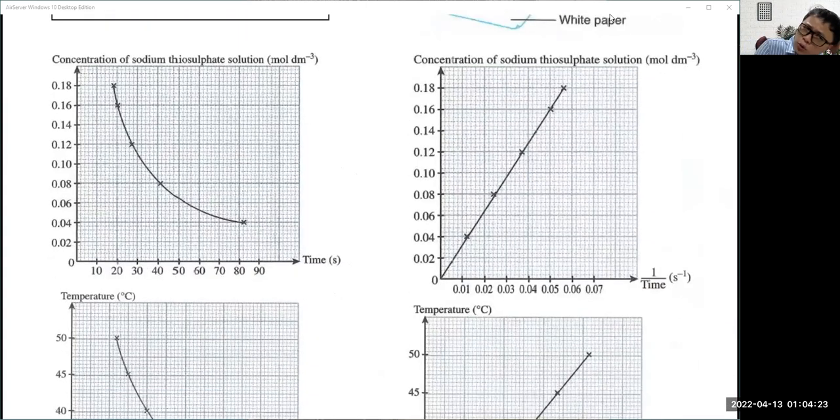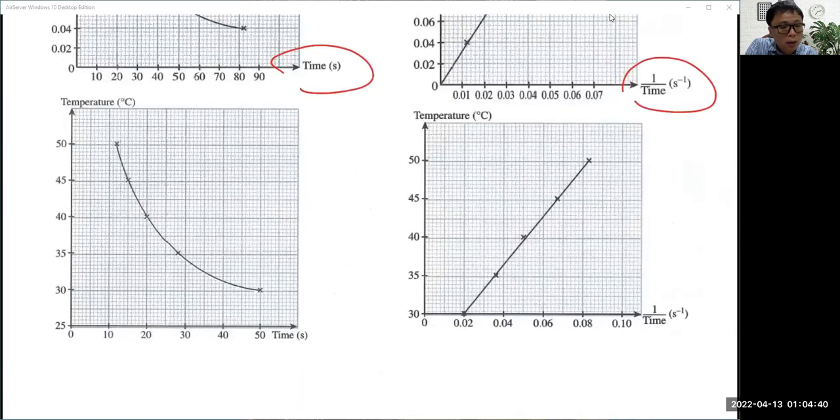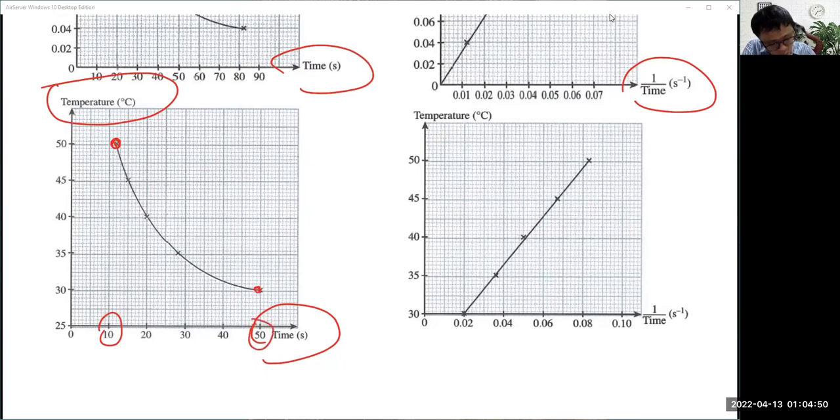For this one, they'll ask you to plot graph. This graph will look something like this, called inverse proportional. To convert inverse proportional to direct proportional, just like you learn in mathematics, you just take one over time, you get direct proportion. Same thing here. If you have inverse proportional, temperature and time, because the higher the temperature, the shorter the time, because higher temperature reaction fast. Lower temperature reaction slow, takes longer time. Same thing, you divide the graph, you get a straight line graph like this.